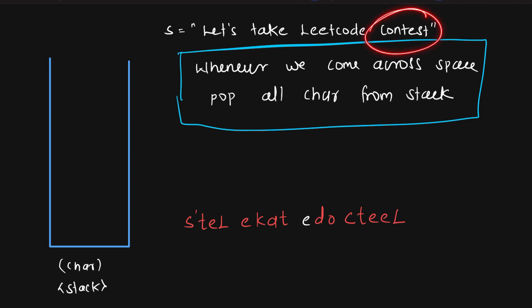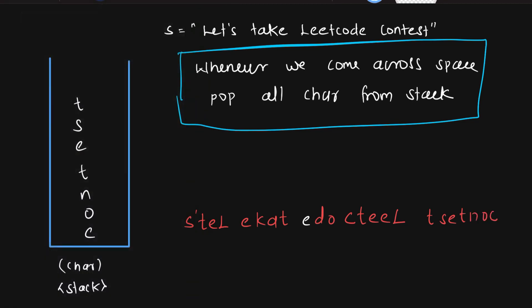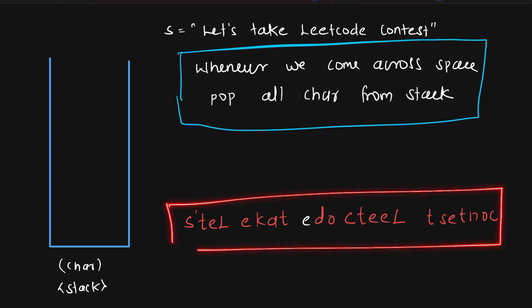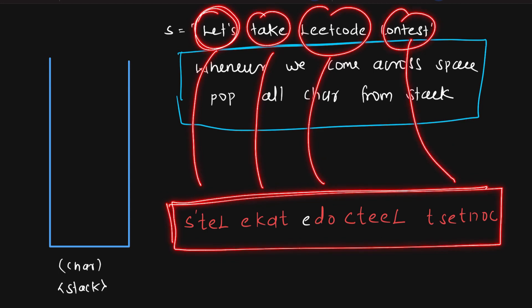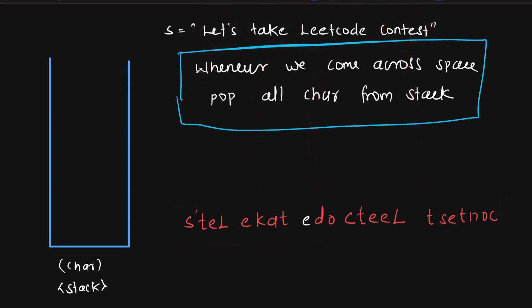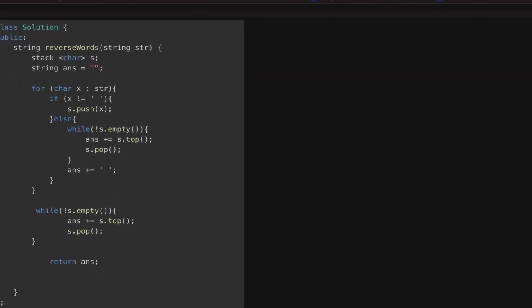Now my stack is empty. I move to the final word 'contest' and push c, o, n, t, e, s, t. Since I don't have any more words, I come out of my loop, but my stack is still not empty. So I pop all the characters: t, s, e, t, n, o, c and add them to my answer. This was the answer we were looking for — we reversed the order of every single character in each word.